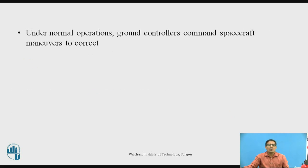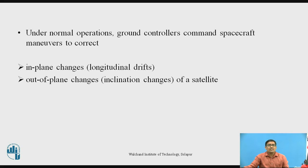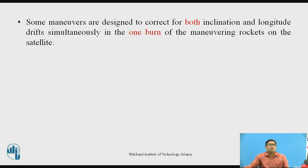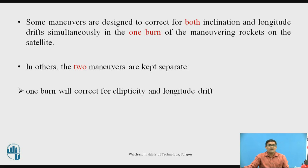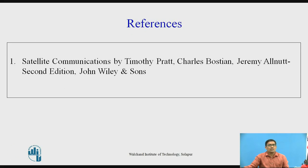If the sun and moon are on the same side of the satellite's orbit, the rate of change of the plane will be higher than the average; if they are on opposite sides, it will be less than the average. Under normal operations, ground controllers command spacecraft maneuvers to correct in-plane changes — called longitudinal drift — and out-of-plane changes — called inclination changes — so that the satellite remains in the correct orbit. Some maneuvers are designed to correct for both inclination and longitudinal drift simultaneously in one burn of the maneuvering rockets. In others, the two maneuvers are kept separate: one burn corrects for eccentricity and longitudinal drift, and another corrects for inclination changes.